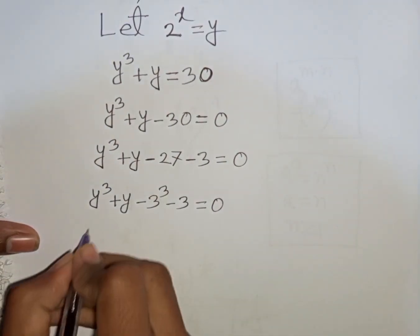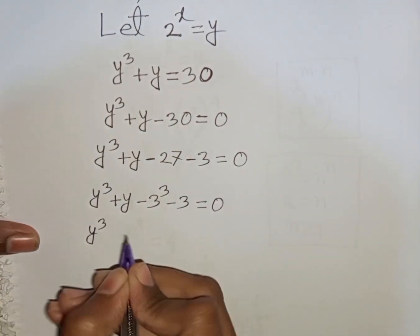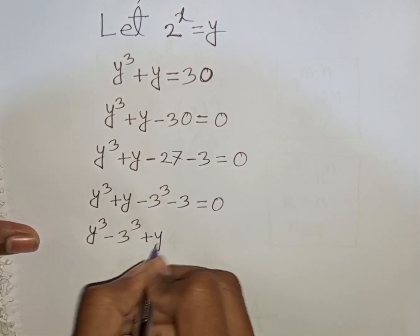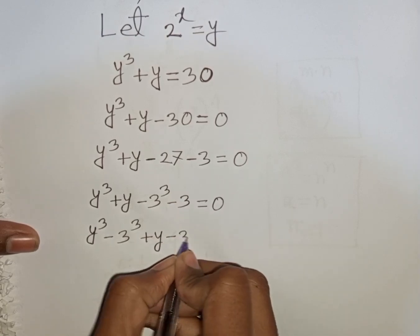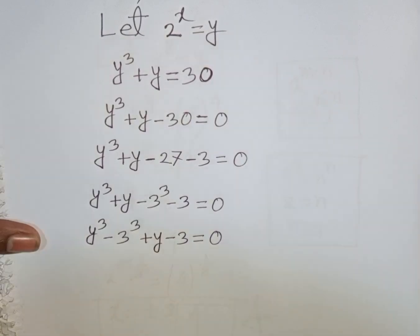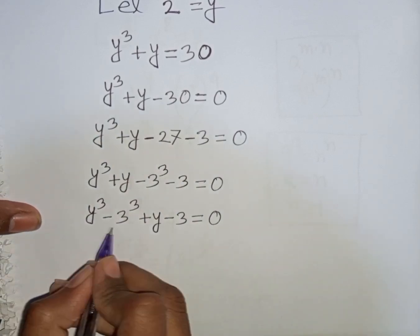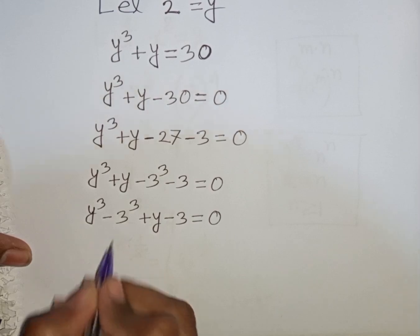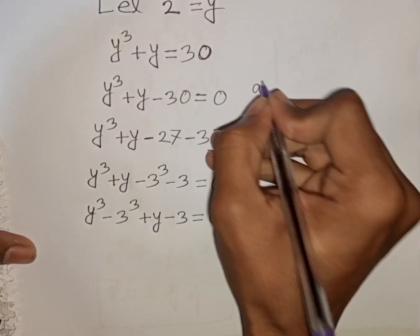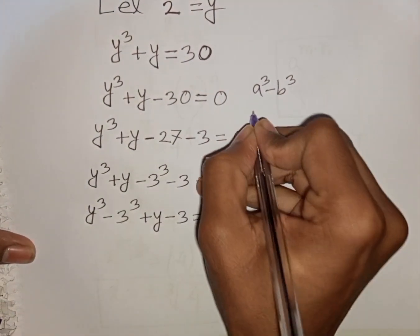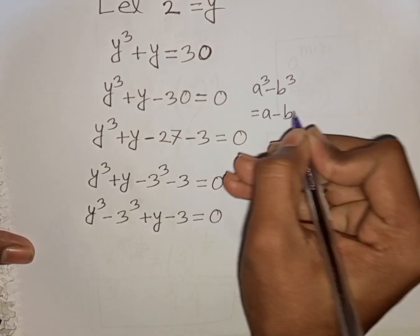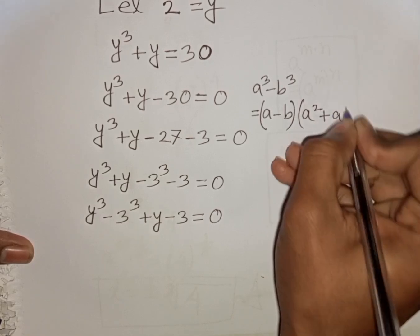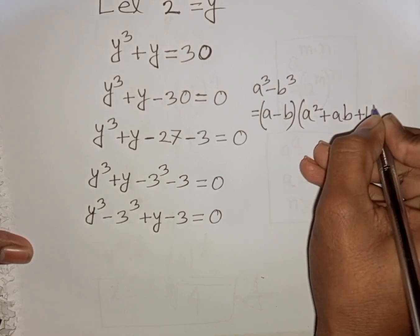Now we have y cube then minus 3 cube, plus y, then minus 3, is equal to 0. Now here you can apply the formula of a cube minus b cube, where a is y and b is 3. So a cube minus b cube is equal to a minus b, times a square plus a b plus b square.